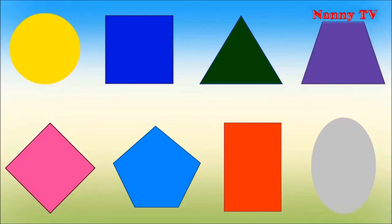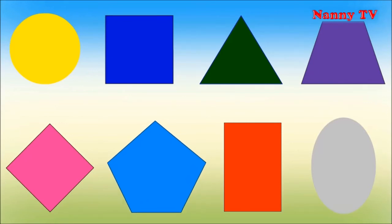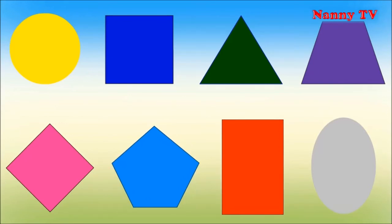A rhombus, a pink rhombus. A polygon, a blue polygon. A rectangle, a red rectangle. An oval, a gray oval.